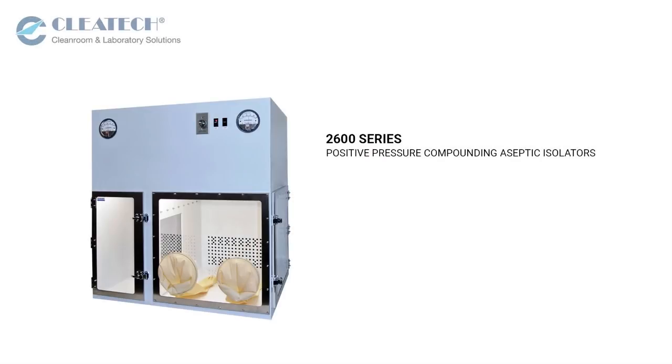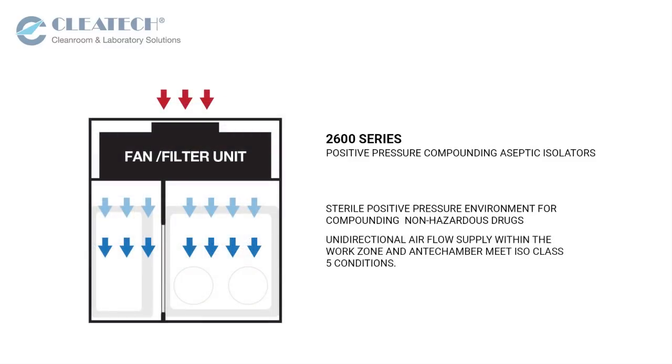The 2600 series positive pressure compounding aseptic isolators are designed to provide a sterile positive pressure environment for compounding non-hazardous drugs. The HEPA-filtered unidirectional airflow supply within the work zone and antechamber meet ISO class 5 conditions.